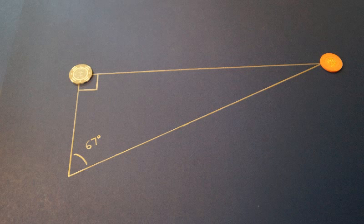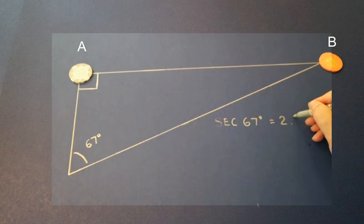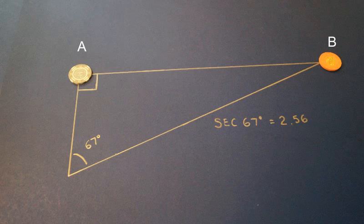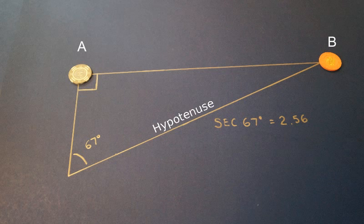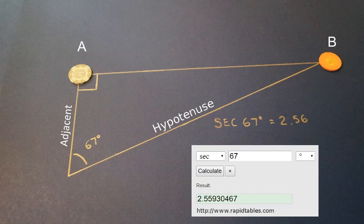Once we know that angle, even without knowing the distances we can calculate the ratio of the distances of the two objects. In other words, how many times farther away is object B than object A? I will explain why this ratio is important later. To get the ratio we simply calculate the secant of the angle which is the trigonometry calculation for the ratio of the length of the hypotenuse over the length of the adjacent side. I put a link in the description for the explanation of this in case your trigonometry is rusty. In our example, this comes out to 2.56. So this means that object B is 2.56 times farther away than object A.